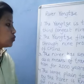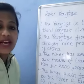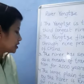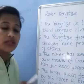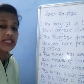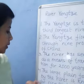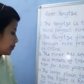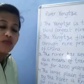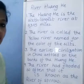The Yangtze flows through nine provinces of China. The river has served as a means of transportation for 2000 years. The large plain formed by the river is known for rice production.